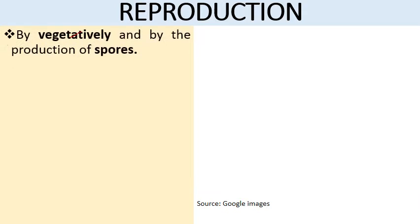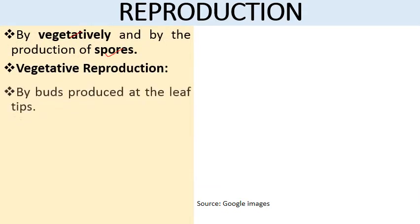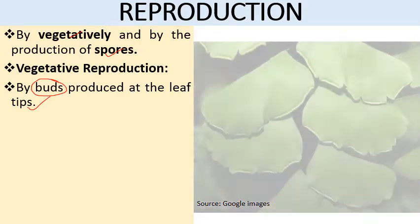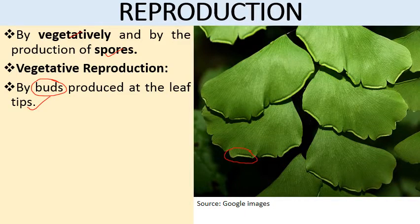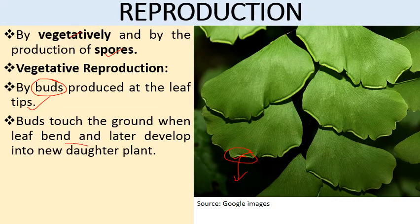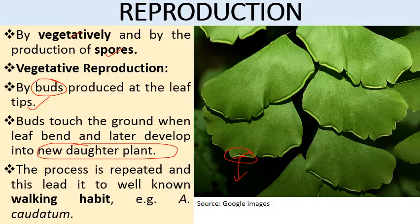Adiantum reproduces both vegetatively and by the production of spores. Vegetative reproduction occurs with the help of buds produced at the leaf tips. These buds have the capacity to give rise to a new plant body. When the leaf bends and the bud touches the ground, a new plant body develops there, which is then repeated, creating the well-known walking habit. For example, this occurs in Adiantum caudatum.